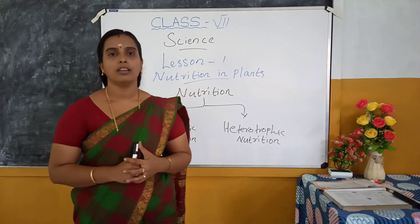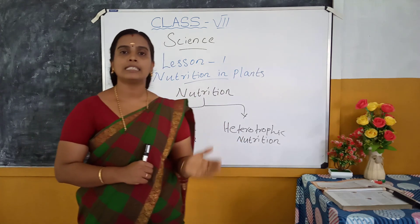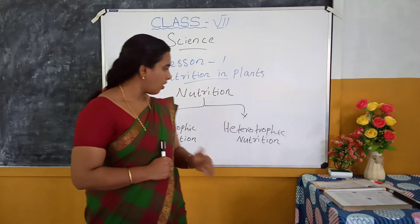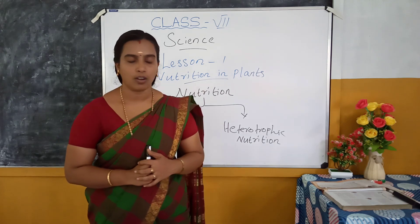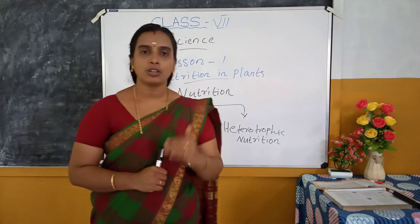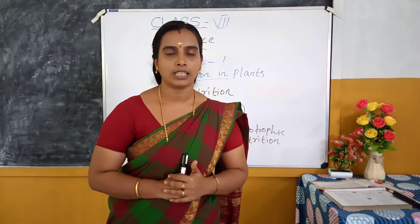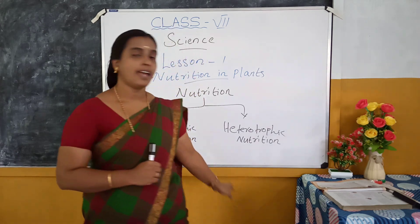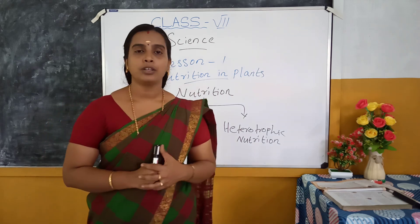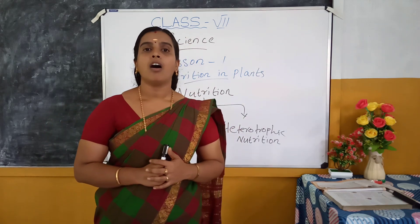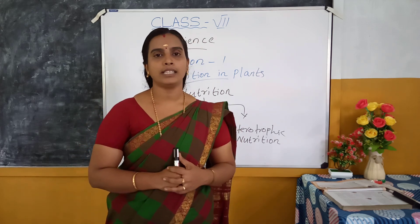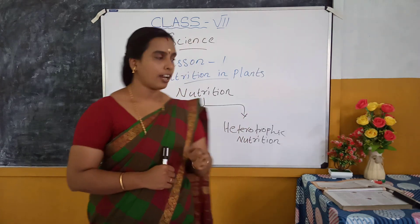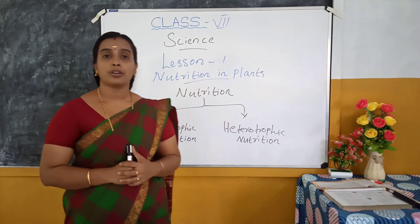Next is Heterotrophic Nutrition. Animals and most other organisms take in ready-made food prepared by the plants — these are called Heterotrophic Nutrition. Examples of Heterotrophic Nutrition are all non-green plants and animals, including human beings. 'Hetero' means Other, and 'Trophos' means Nourishment. These are the two modes of Nutrition.